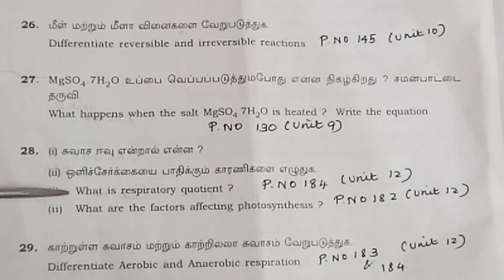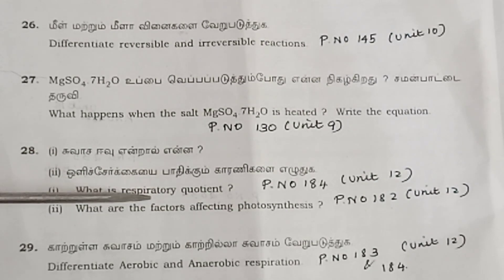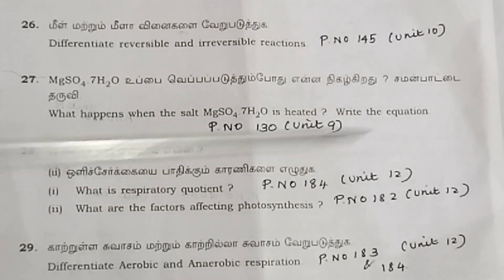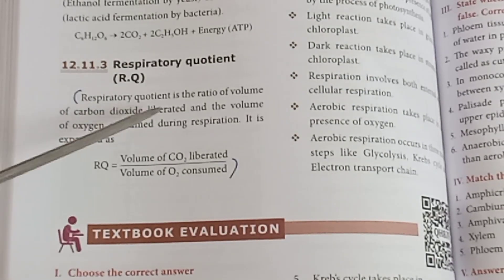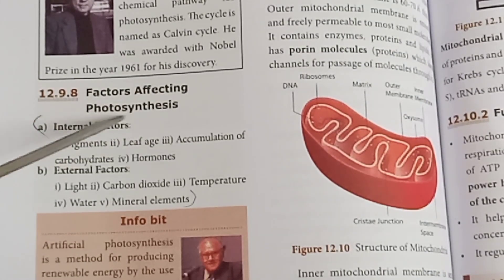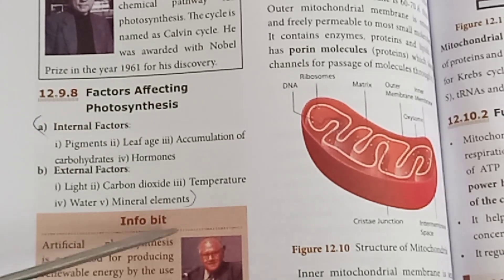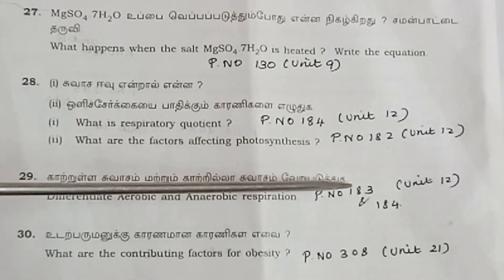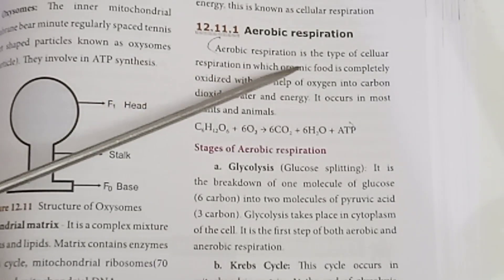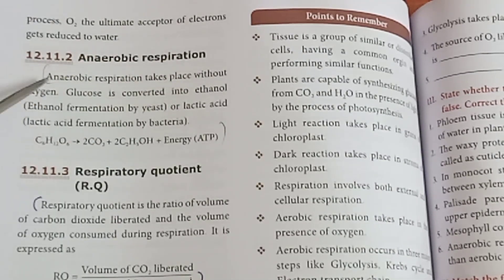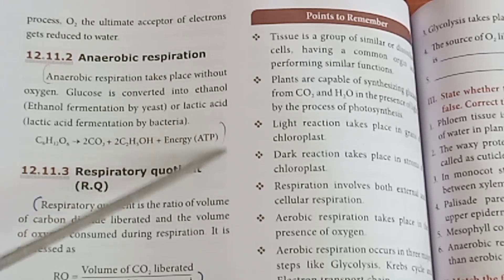Question 28: What are the factors affecting photosynthesis? This is a very important question from May 2022. Page number 184, Unit 12. Respiratory question — differentiate aerobic and anaerobic respiration. Page number 183, Unit 12. Aerobic respiration vs. anaerobic respiration — energy produced as ATP.